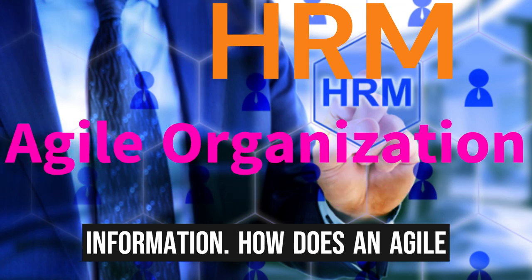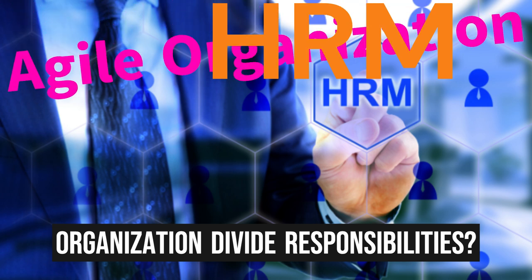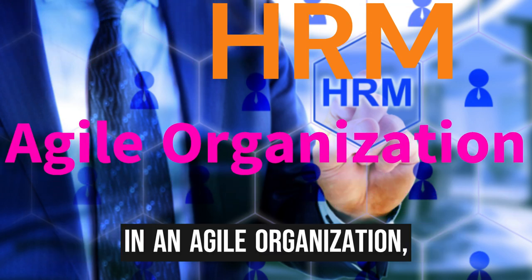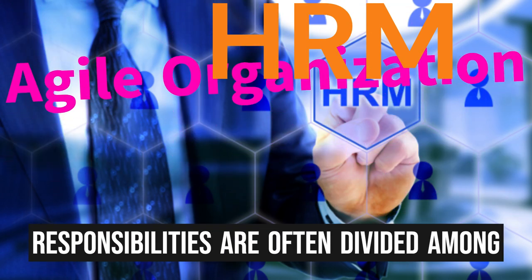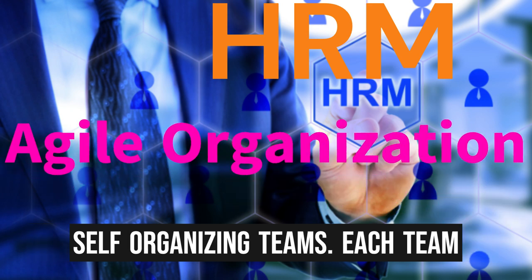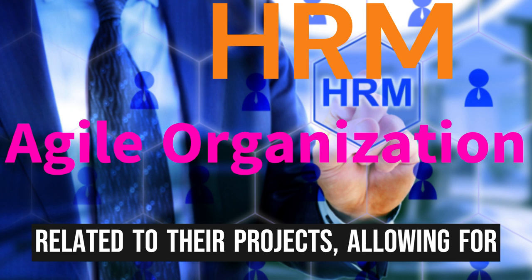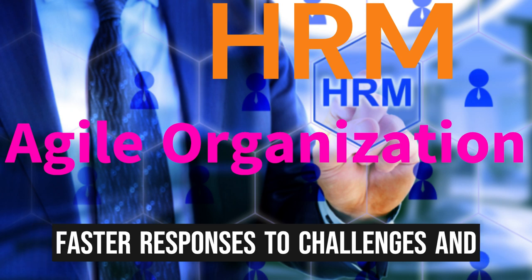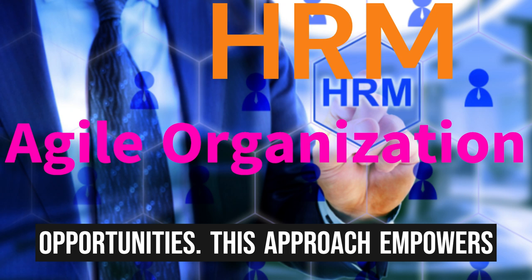How does an agile organization divide responsibilities? In an agile organization, responsibilities are often divided among self-organizing teams. Each team has the autonomy to make decisions related to their projects, allowing for faster responses to challenges and opportunities.